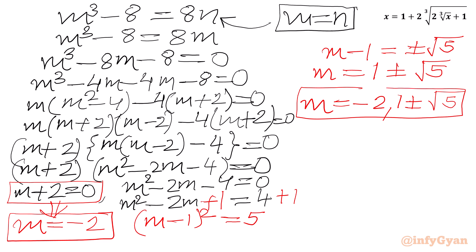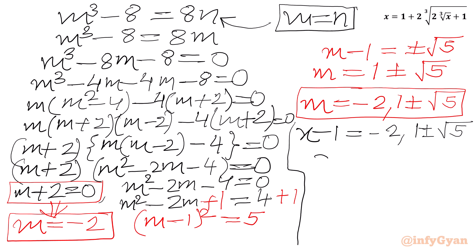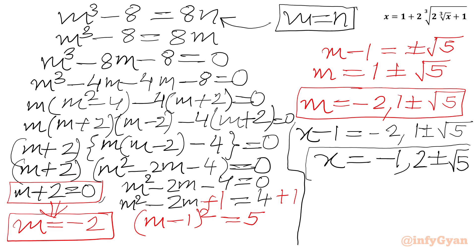Now m was our substitution m equal to x minus 1. So I will write x minus 1 equal to negative 2 and x minus 1 equal to 1 plus or minus square root 5. Adding 1 to both sides, x becomes negative 1, and x equals 2 plus or minus square root 5. So we have overall 3 solutions and all 3 are real valued.